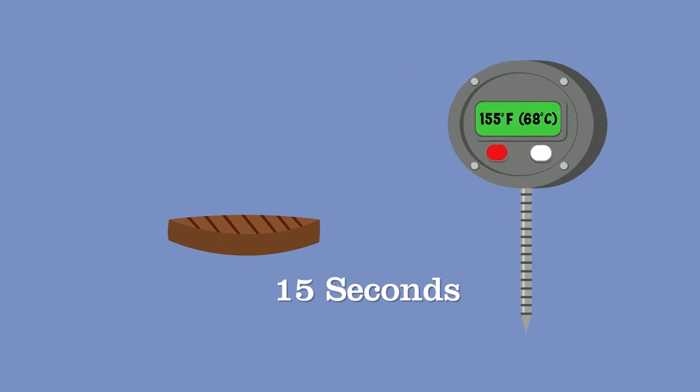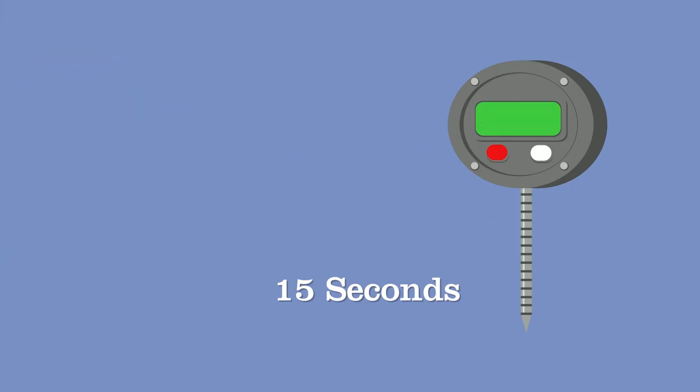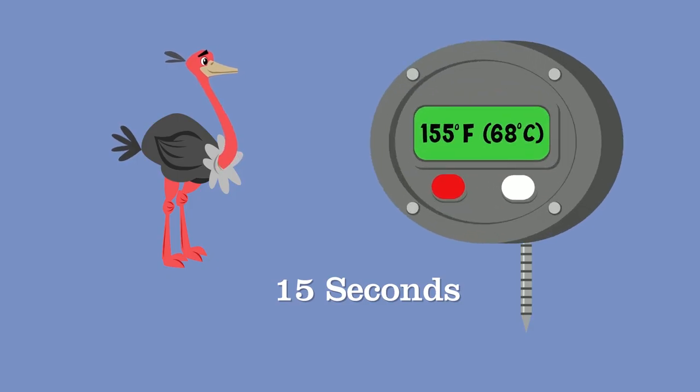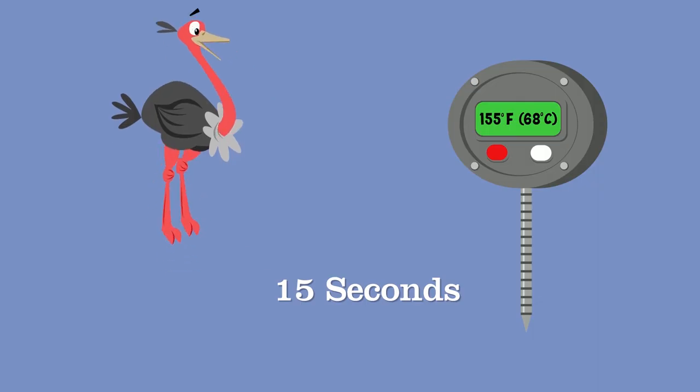The same goes for mechanically tenderized meat and injected meat, including brined ham and flavor-injected roast, ground, chopped, or minced seafood, and shell eggs that will be hot held for service. And here's the really obscure one: 155 degrees Fahrenheit (68 degrees Celsius) for 15 seconds is also the cooking temperature for ratites, which include emu and ostrich. Who knew?